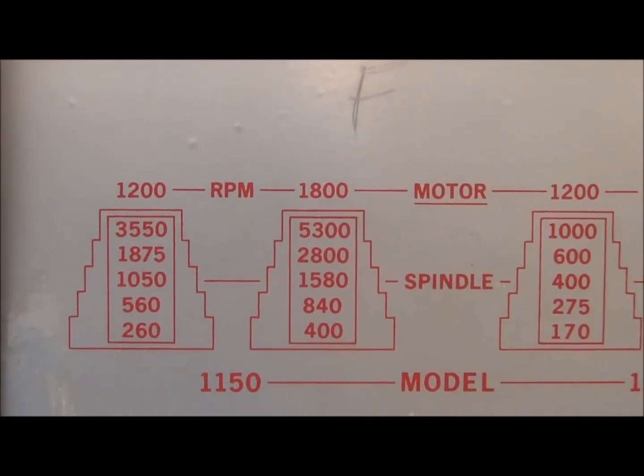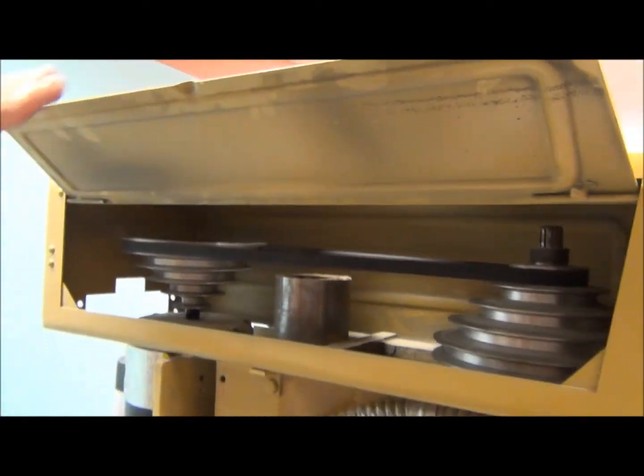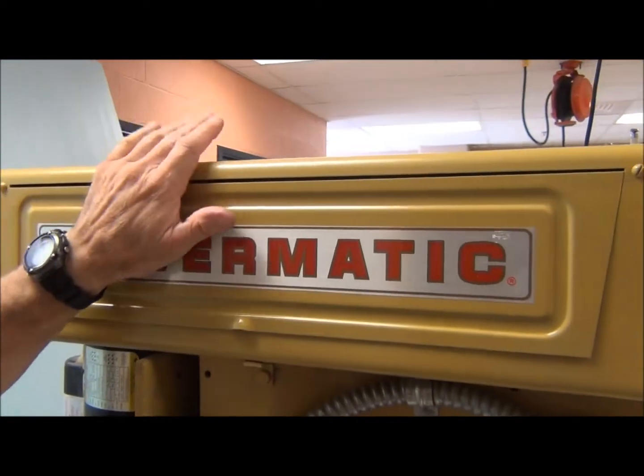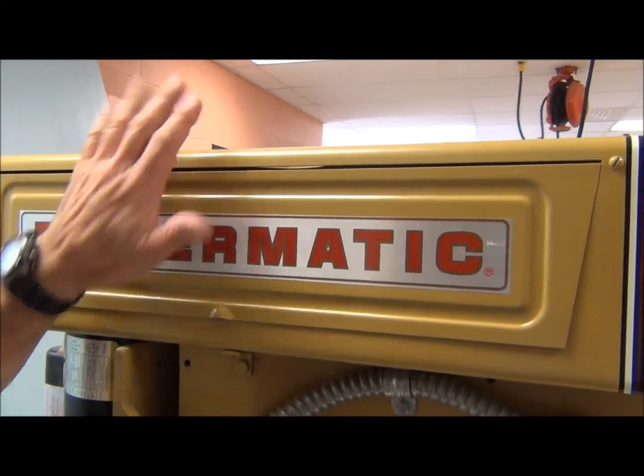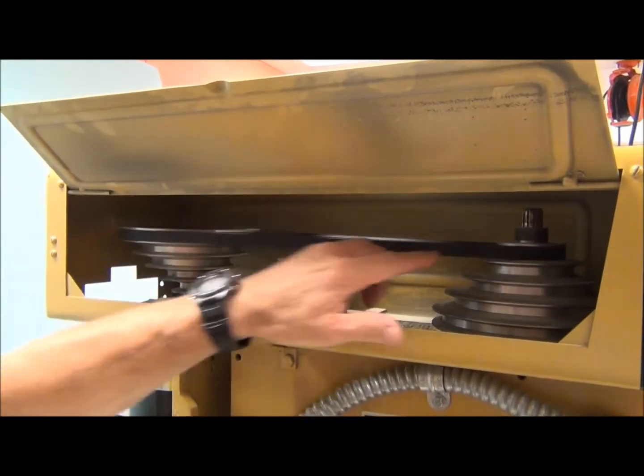Now let's see what that looks like on the actual belt and pulley system. We open up this door, this part here is creatively called the belt and pulley guard. We open up the door on the belt and pulley guard, and here is the belt and the pulleys.